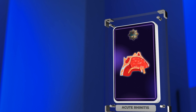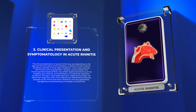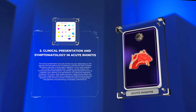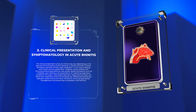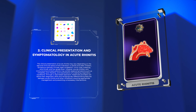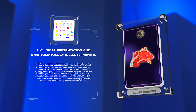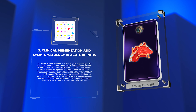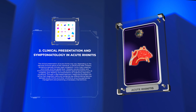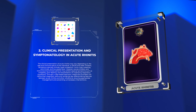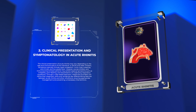The clinical presentation of acute rhinitis may vary depending on the age and immune status of the individual. In adults and older children, symptoms typically include nasal congestion, runny nose, sneezing, sore throat, and low-grade fever. However, young children and immunocompromised patients may exhibit atypical symptoms such as irritability, poor feeding, and exacerbation of underlying respiratory conditions. Through a case-based approach, healthcare providers can refine their diagnostic skills and recognize key differentiating features between acute rhinitis and other conditions, ensuring appropriate management and preventing unnecessary interventions.